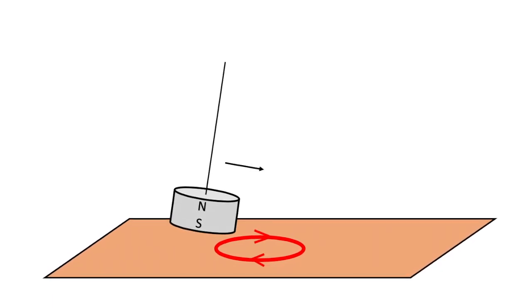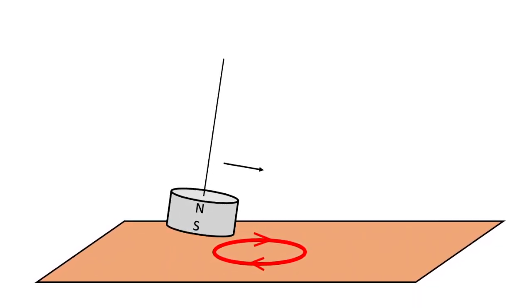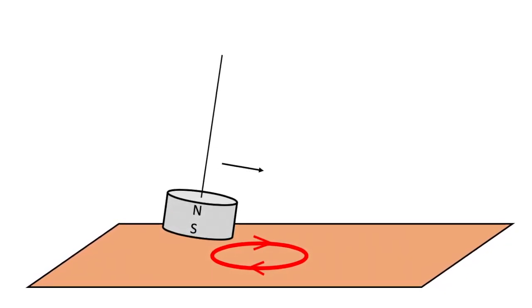As the magnet moves across an area on the copper plate, the change in magnetic flux induces eddy currents on the plate.